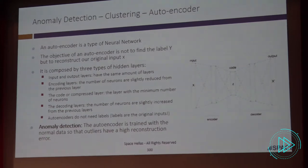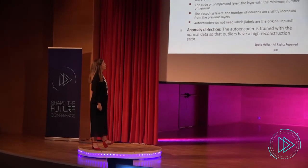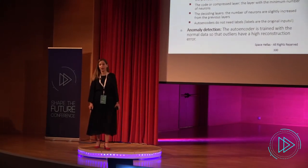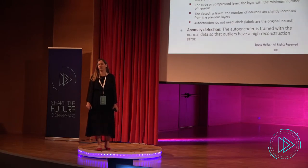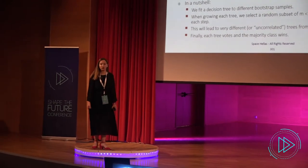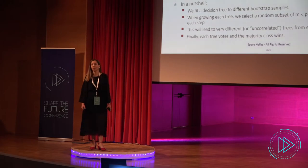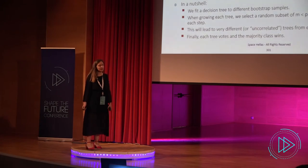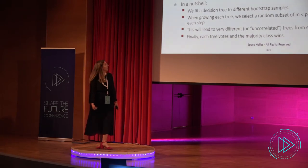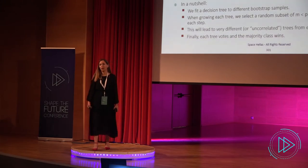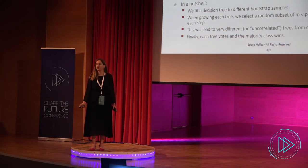We also use autoencoders, which are a type of neural network. The objective is not to find the label but to reconstruct the original output. The autoencoder is trained with normal data so that outliers have a higher reconstruction error. And random forests are random for two reasons: we use random sampling to build the trees, and we use random subsets of features when we want to split the trees. We feed the tree to different bootstrap samples, grow each tree with a random subset of predictors, and guarantee each sample is uncorrelated. At the end, we use the majority vote and the most voted class wins.